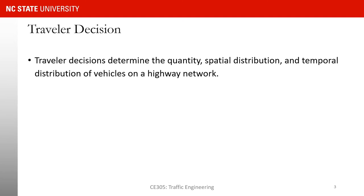Now I want to focus for a few minutes on the decisions that a traveler is going to make for a trip. Those decisions, as we discussed, are going to change or determine the quantity, the spatial distribution, and the temporal distribution of vehicles on a network — telling us how many vehicles are going to be on which link at what time.